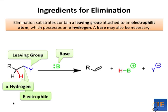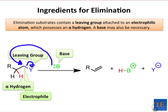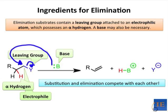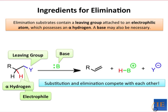One thing that should jump out at you here is that the substrates for elimination look, in the abstract, almost identical to the substrates of substitution reactions. In fact, on these substrates, we can immediately envision an SN2 process where the base acts as a nucleophile. Substitution and elimination compete with each other. Depending on the exact character of the starting materials, we may favor substitution over elimination or vice versa. More on this later, but let's turn our attention now to the two most common elimination mechanisms, E2 and E1.